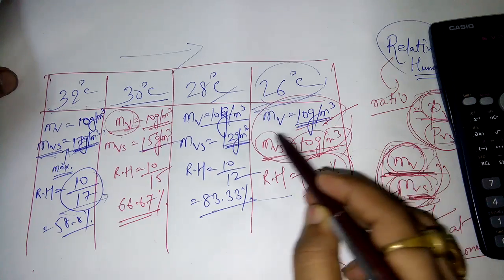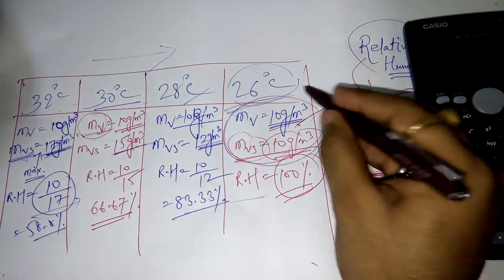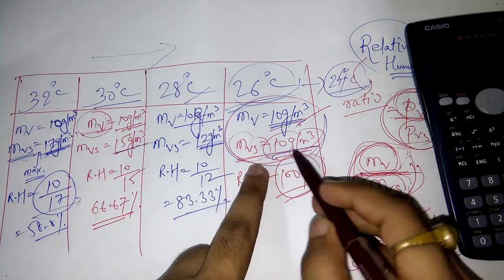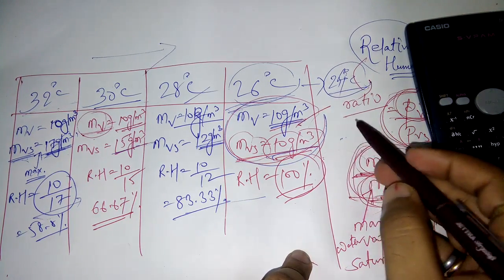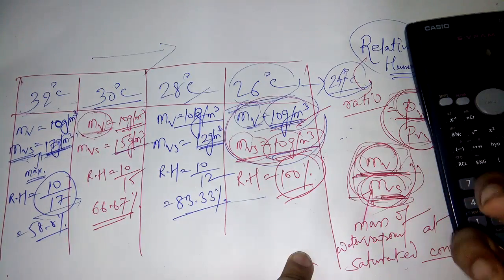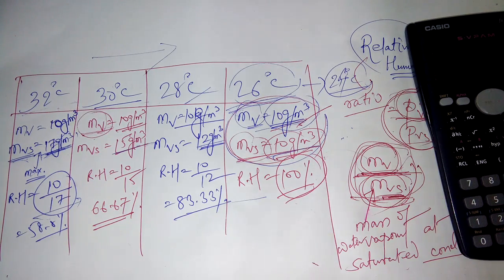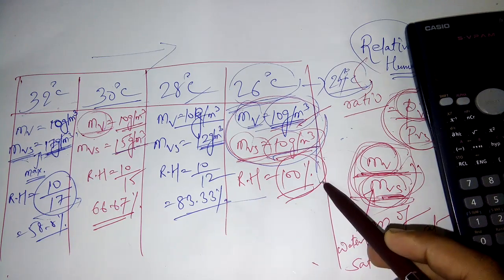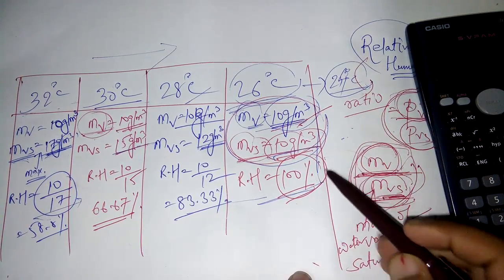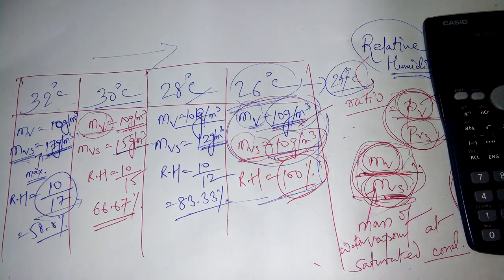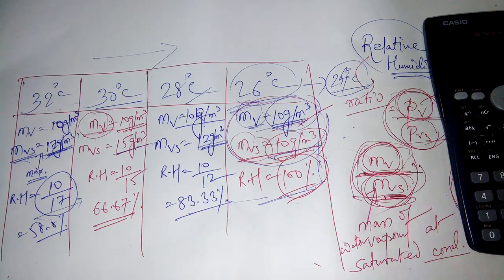Once air reaches the saturated zone, if you decrease the temperature further — say to 24°C — the MVS value becomes less than the current vapor present. When that happens, the excess moisture precipitates down. Once it precipitates, relative humidity decreases again. So relative humidity cannot go beyond 100%. Below saturation, moisture precipitates as dew, fog, or rain.